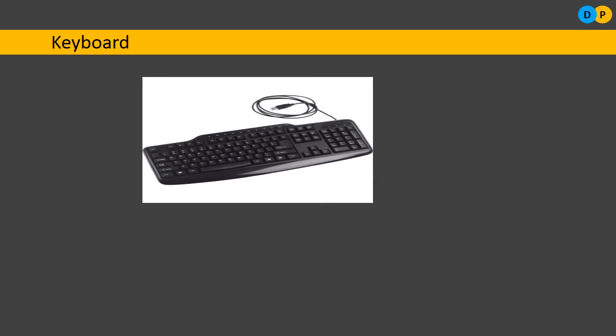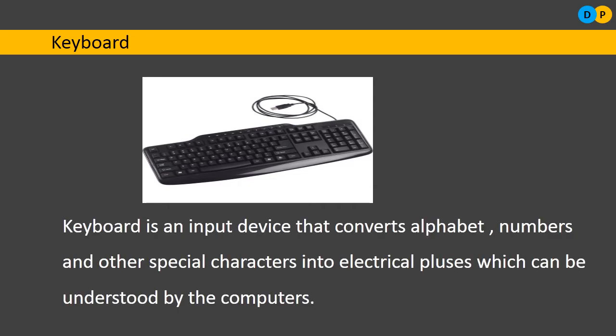Each one of you has surely seen a keyboard. A keyboard is a hardware device — something you can touch and feel — via which we can feed data to the computer. The keyboard is one of the standard input devices. There are many other devices available such as a light pen, mouse, and joystick, but the keyboard is standard because using it you can key in alphabets, numbers, special symbols, and digits, and you can control sound, video, and other things.